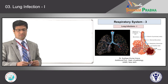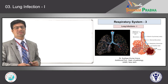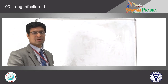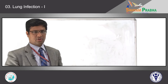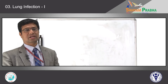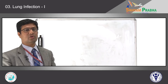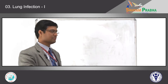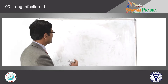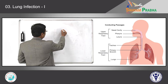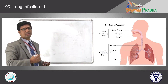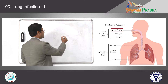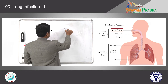We have seen in my previous class regarding what are the normal defense mechanisms which prevent infections. Depending on which part of the respiratory tract is infected, we have separate names. For example, if infection occurs in the nose, there is a specific terminology — we call it rhinitis.